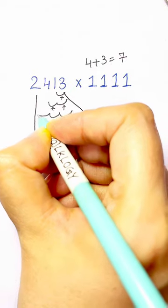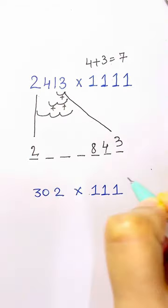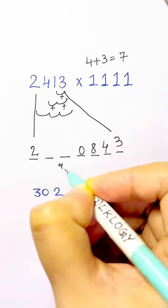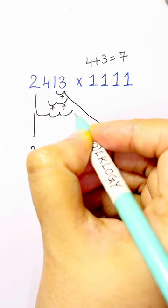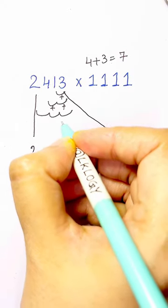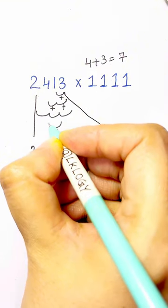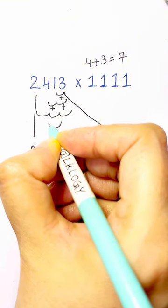And then next we'll add these two: 1 plus 4 plus 2, that's seven.